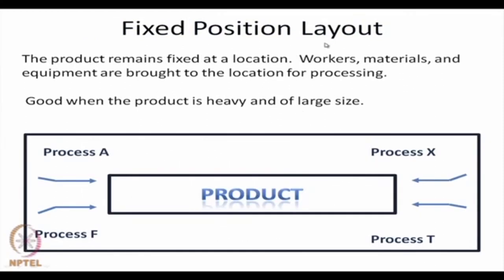In a fixed position layout, normally very heavy and large size products such as a ship or an aircraft are put in one place and different processes serve the production need for the product. Workers, materials, and equipment are all brought to the location for processing the product.